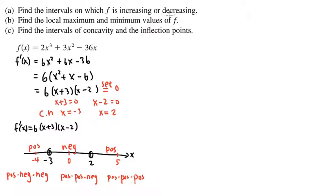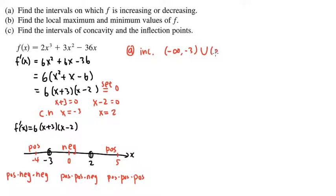We can now answer Part A: on what intervals is f increasing or decreasing? f is increasing when the first derivative is positive, so from negative infinity to negative 3, and from 2 to infinity. We do not include the endpoints because when x is negative 3 or x is 2, the first derivative is 0, so it is neither increasing nor decreasing. f is decreasing when the first derivative is negative, which is from negative 3 to 2.